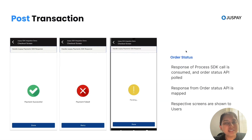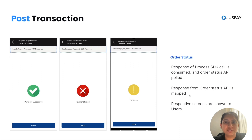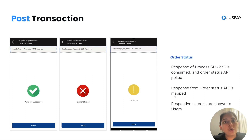Once the transaction is completed, the JustPay SDK will return the response of the process SDK call, and merchant servers have to call the order status API to know the status of the order. Based on that status, you can show your users the successful screen, the failure screen, or the pending screen. I hope this video will help you in getting started with the integration. Thanks for watching the video.